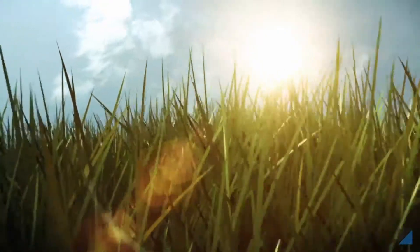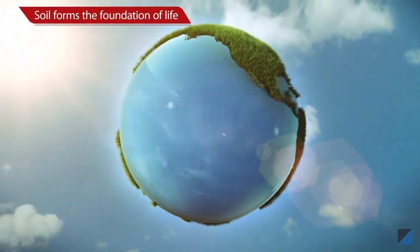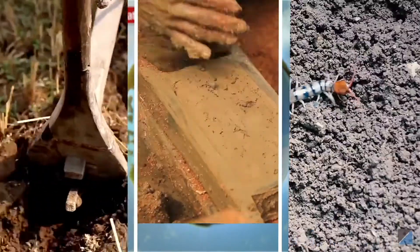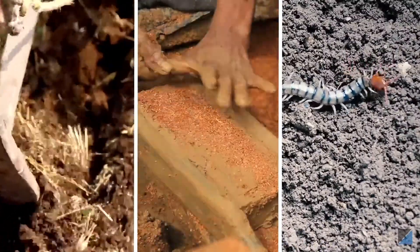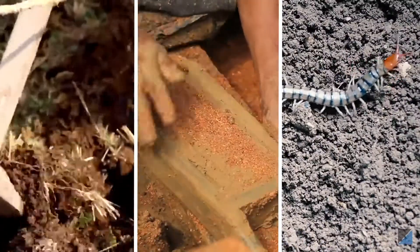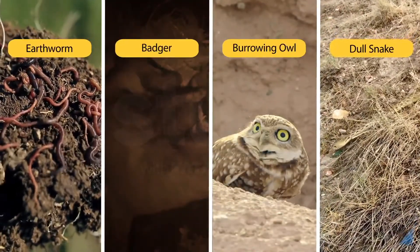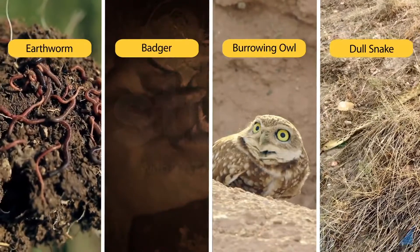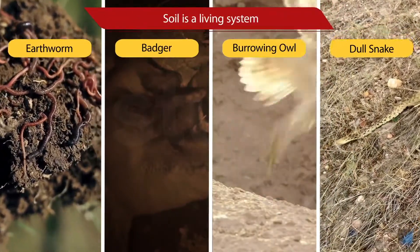Soil is a living, renewable, natural resource that forms the foundation of life on the planet. It provides food, building material and is home to several animals and insects. Since the soil supports different types of living organisms, it is often regarded as a living system.